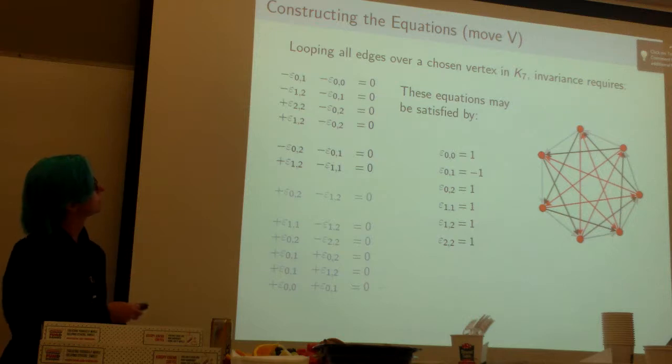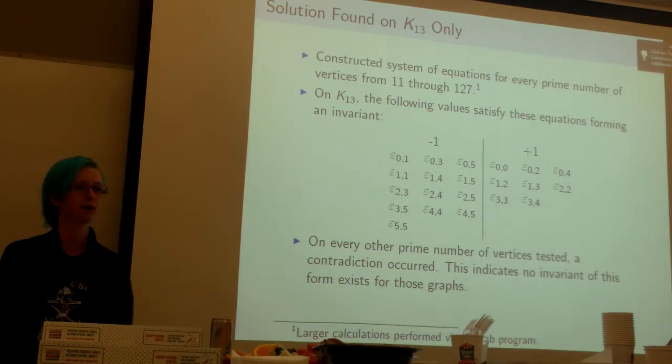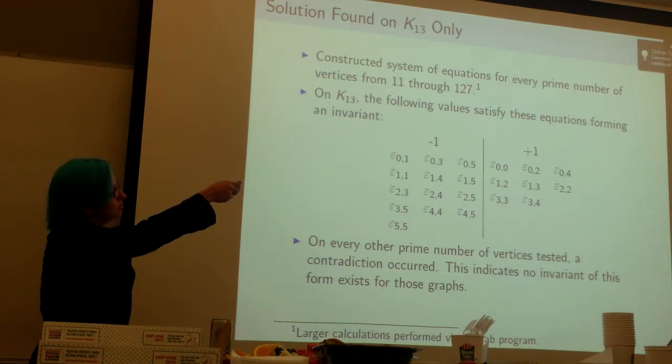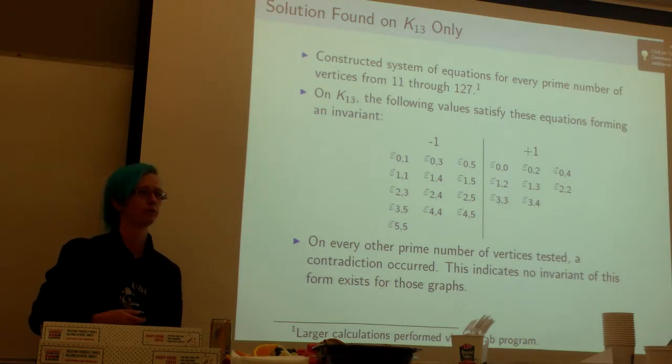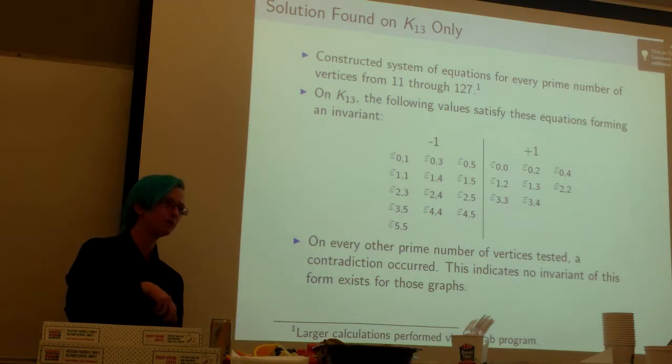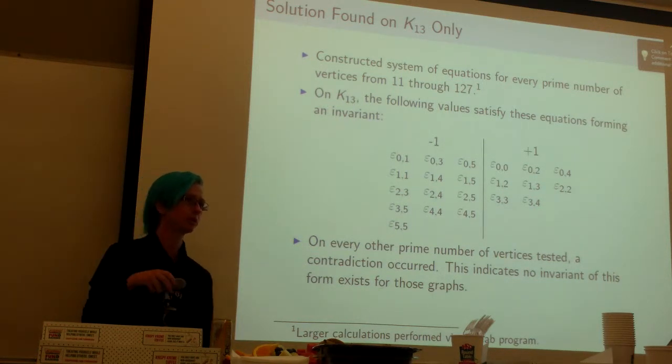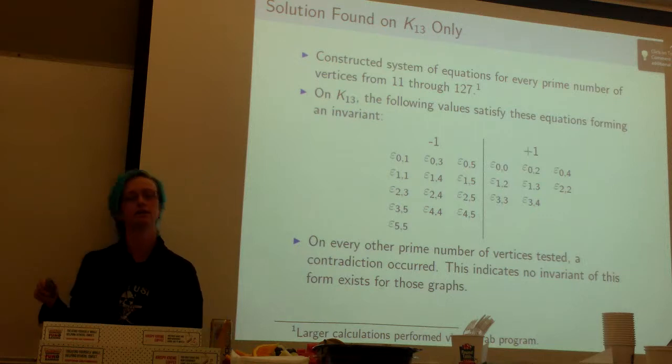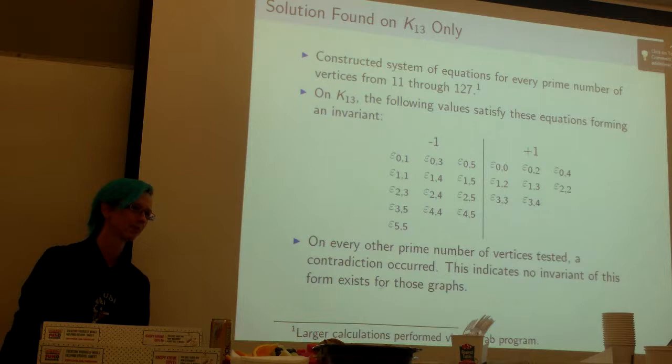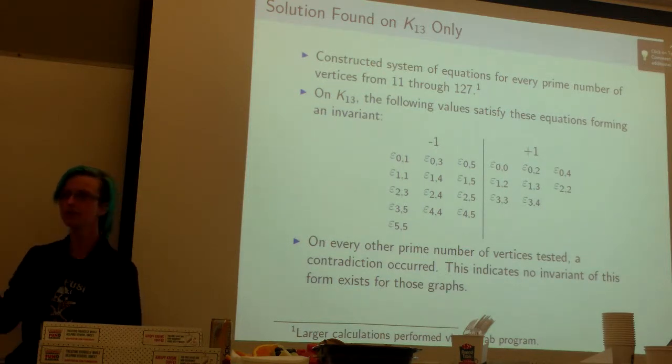So now that we see how to construct the equations, what did I do? I took every prime number from 11 to 127. I did the first few by hand, went up to 23 by hand, and then I said no, this is too much work. I made a MATLAB program to do it for me.